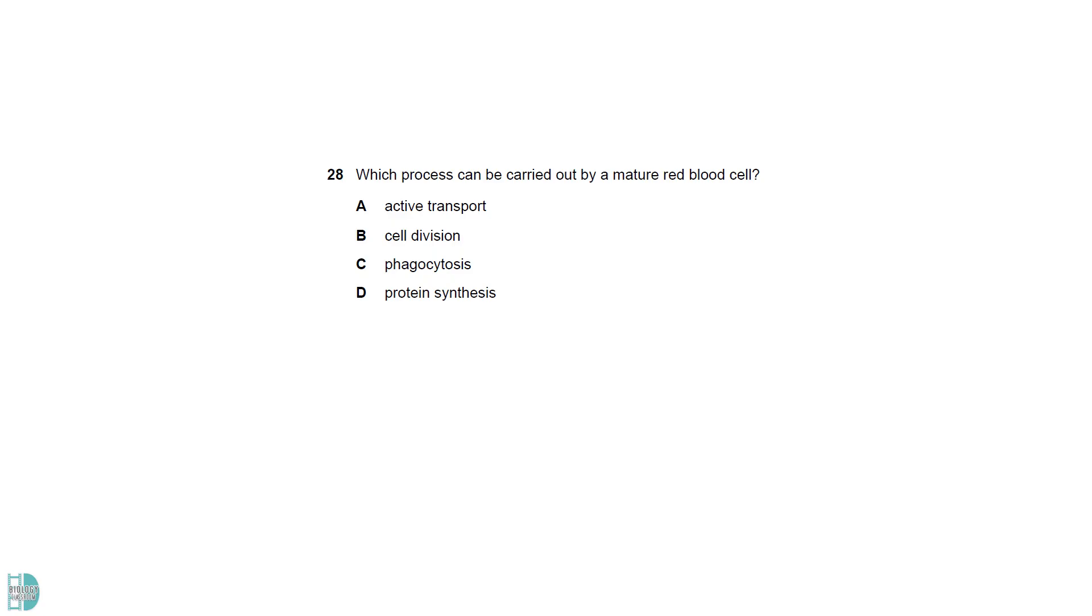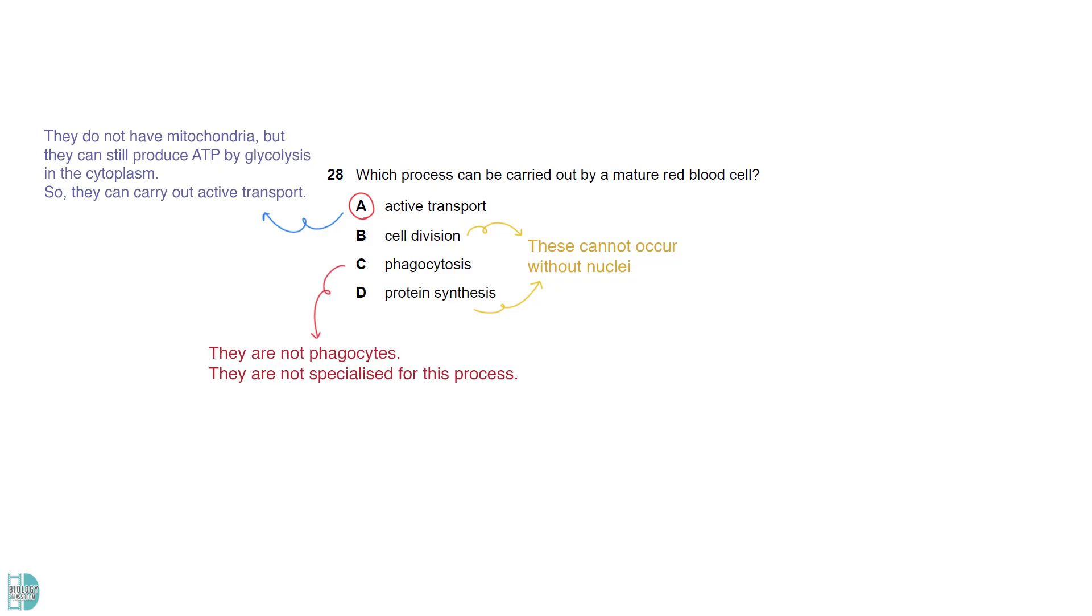Even though red blood cells do not have mitochondria, they can still produce ATP by glycolysis in the cytoplasm. So, they can carry out active transport. Without nuclei, they cannot carry out cell division and transcription. Red blood cells are not phagocytes. They are not specialized for this process.